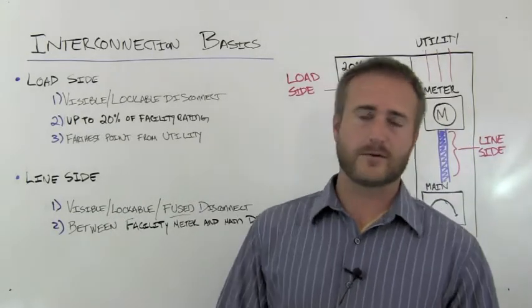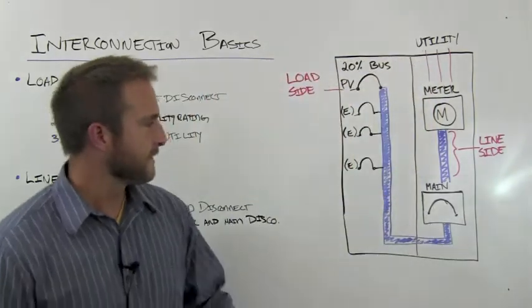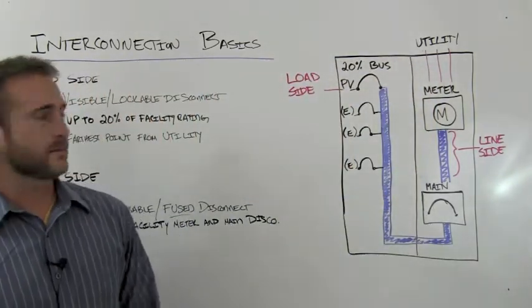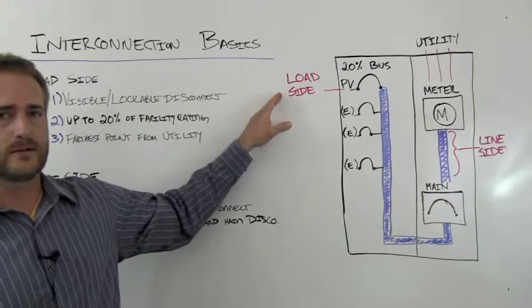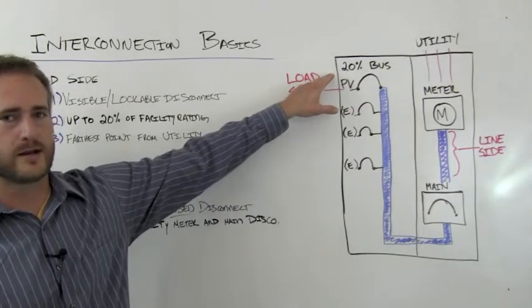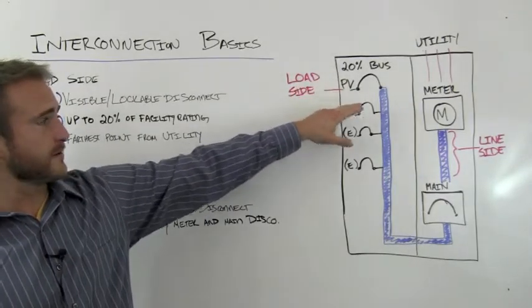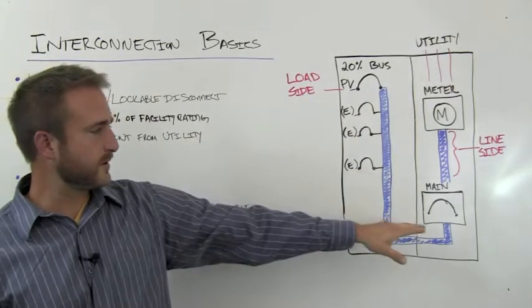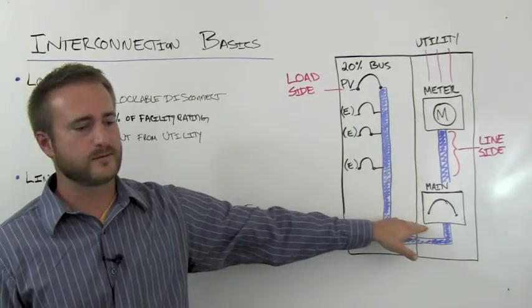And what that means diagrammatically, if this is your facility gear, for your load side connection, you can feed up to 20% of your gear's rating at a breaker farthest away from the point of utility feed on your bus.